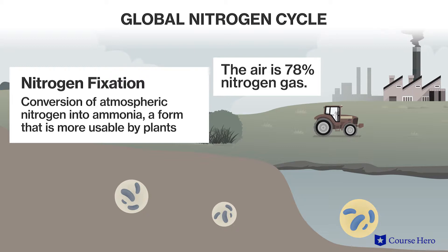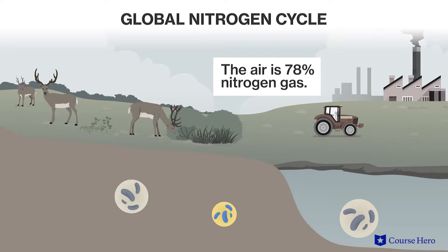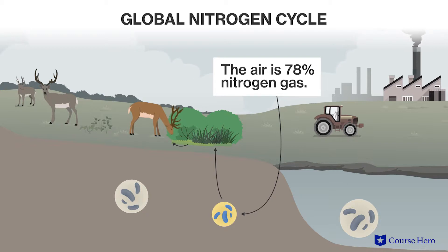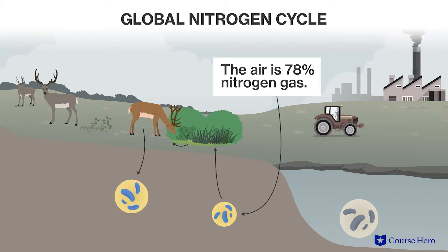Bacteria that live on the roots of legume plants, for example, are able to convert atmospheric nitrogen gas into ammonia, a form that is usable by plants. After plants take up the fixed nitrogen, other organisms can obtain it by consuming the plants. Nitrogen is excreted from animals in urine and feces. When an organism dies, decomposers such as bacteria and fungi break down proteins into individual amino acids.